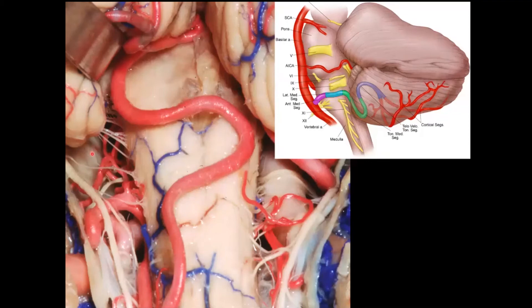It's a really tortuous vessel with quite an interesting course. It comes back, goes around, then down through the caudal loop, coming all the way back up underneath the hemisphere and forming the telovellotonsillar segment. It then courses all the way down and envelops the cerebellar hemisphere from inferior, hugging it from the medial aspect all the way around, supplying blood through the cortical segments.